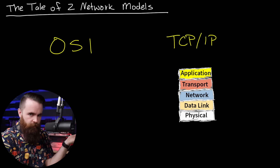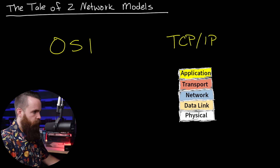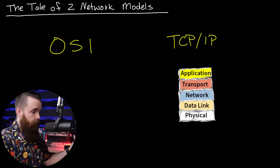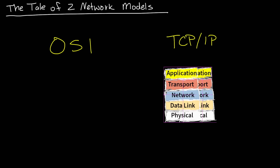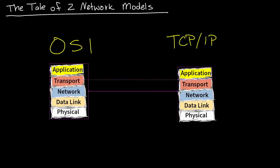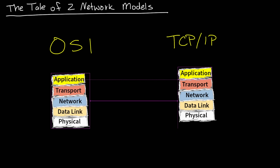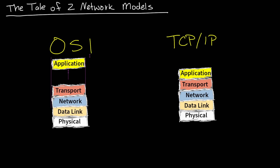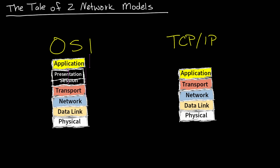Now what about the OSI model? Where does this guy come in? Similar to TCP/IP, it works on layers. In fact, it shares the same layers as the TCP/IP model — it just has a few extra. So physical, data link, network, transport — that's the same. But then at the application layer, it's a bit different. We're going to add a couple more: a session layer and a presentation layer.